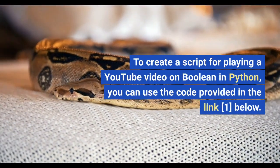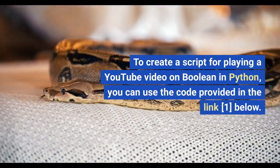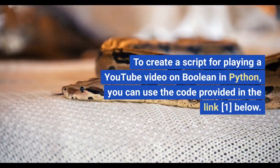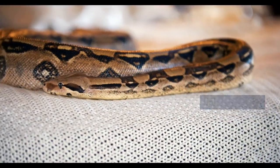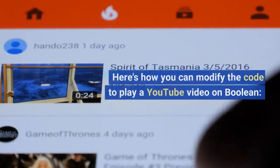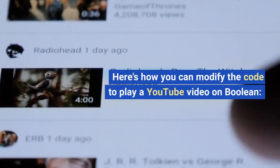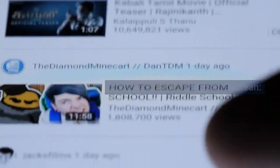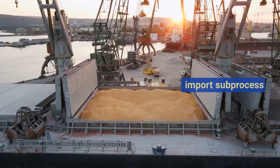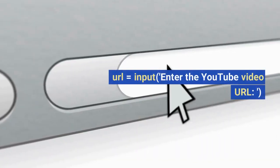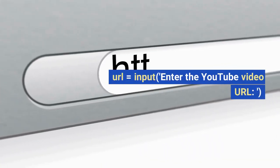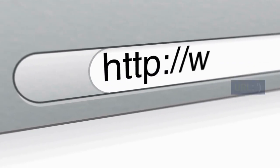To create a script for playing a YouTube video on Boolean in Python, you can use the code provided in the link below. Here's how you can modify the code: import subprocess, URL equals input — enter the YouTube video URL — then if 'boolean' in URL lower.